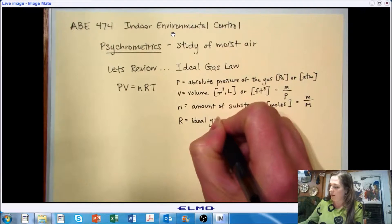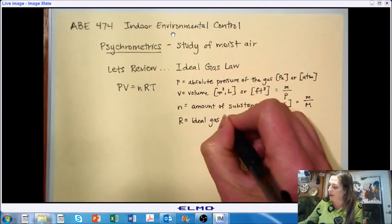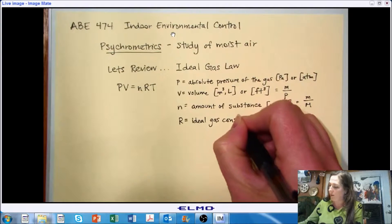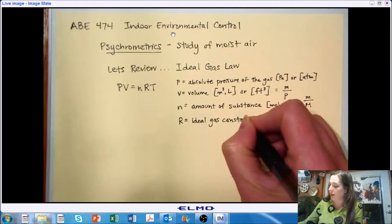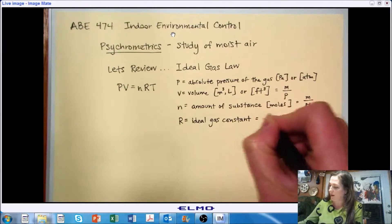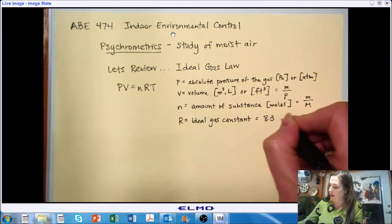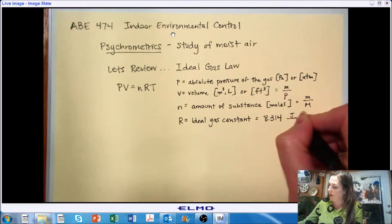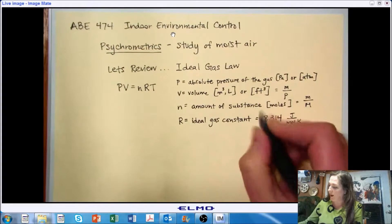R is our ideal gas constant, which might also be referred to as the universal gas constant. And in SI units, it's 8.314 joules per mole Kelvin.